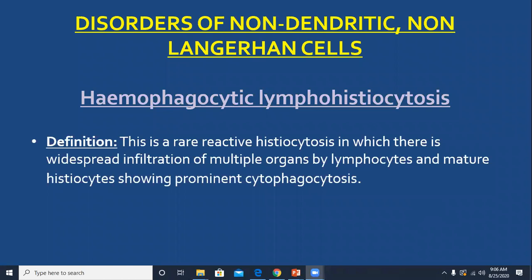The first group is the non-dendritic and non-Langerhans cell histiocytosis. This is a unique group which includes only one disease: hemophagocytic lymphohistiocytosis. The histiocytes here are phagocytes. Hemophagocytic means the histiocytes have ingested RBCs, and lymphohistiocytosis means the primary cells, in addition to histiocytes, are lymphocytes.